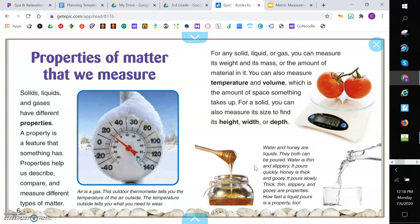Water and honey are liquids. They both can be poured. Water is thin and slippery. Honey is thick and gooey. It pours slowly. Thick, thin, slippery, and gooey are properties. How fast the liquid pours is a property too.